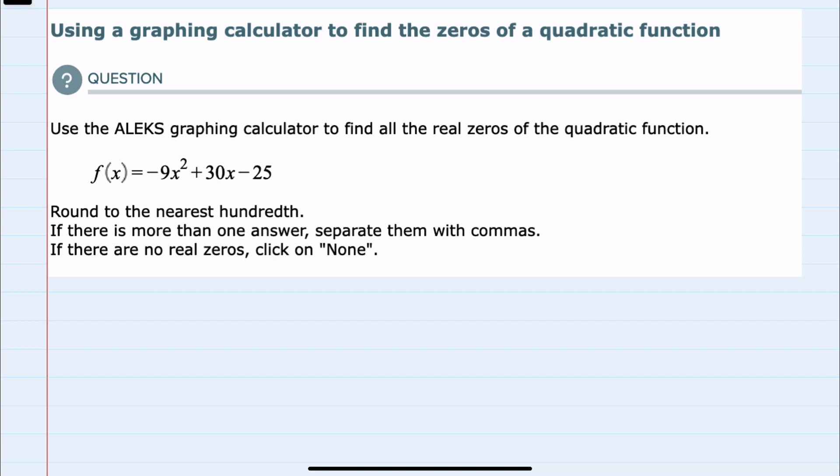We're given the function f(x) equals negative 9x squared plus 30x minus 25, and we're asked to use the graphing calculator to find the zeros if there are any. There might be one zero, there could be two zeros, or even none if our graph doesn't cross the y-axis.